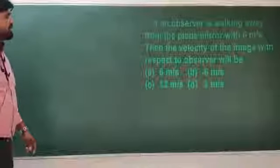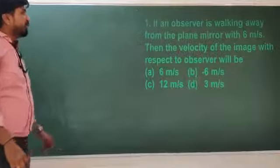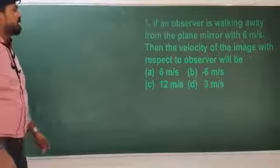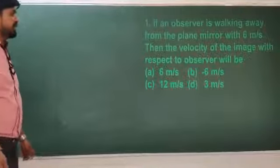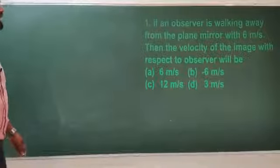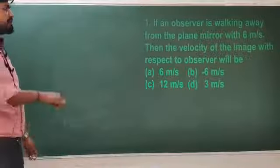If an observer is walking away from the plane mirror with 6 meters per second, then the velocity of the image with respect to the observer will be...